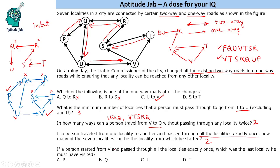If a person started from V and passed through all the localities exactly once, which was the last locality visited? From the previous answer, if the person starts from V the last locality is going to be P. This is the solution to the set and the answers to all the questions.